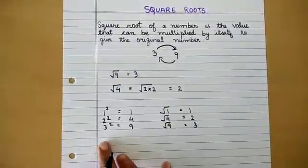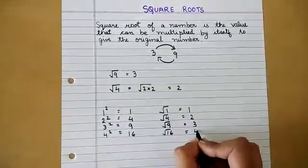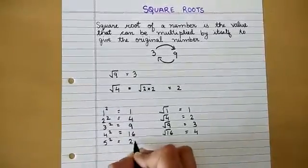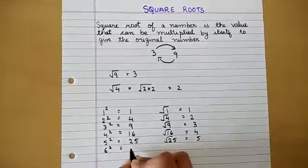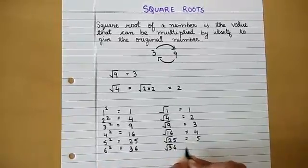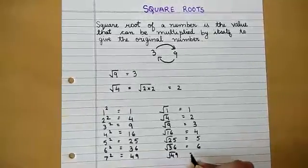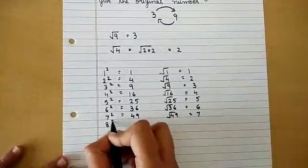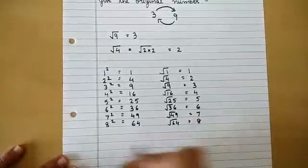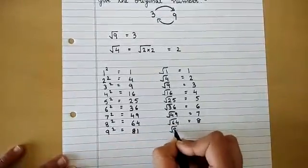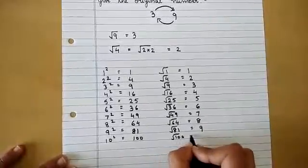We must learn at least up to 10 and always remember these. The square of 4 is 16, so the square root of 16 is 4. The square of 5 is 25, so the square root of 25 is 5. The square of 6 is 36, so the square root of 36 is 6. The square of 7 is 49, so the square root of 49 is 7. The square of 8 is 64, so the square root of 64 is 8. The square of 9 is 81, so the square root of 81 is 9. The square of 10 is 100, so the square root of 100 is 10.